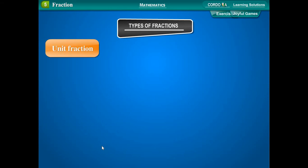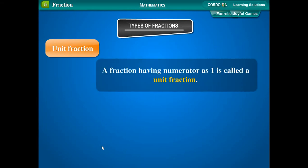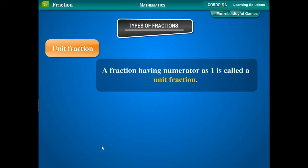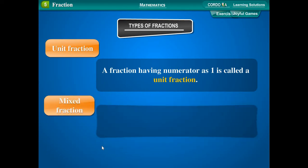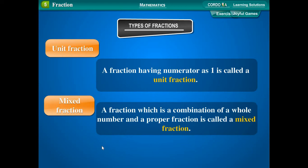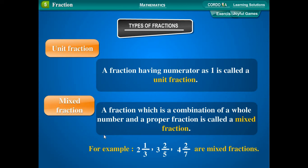Unit fraction: A fraction having numerator as 1 is called a unit fraction. For example, 1 upon 2, 1 upon 3, 1 upon 5, and 1 upon 7 are unit fractions. Mixed fraction: A fraction which is a combination of a whole number and a proper fraction is called a mixed fraction. For example, 2 and 1 upon 3, 3 and 2 upon 5, and 4 and 2 upon 7 are mixed fractions.